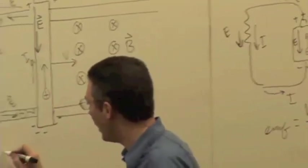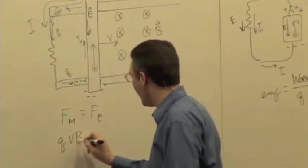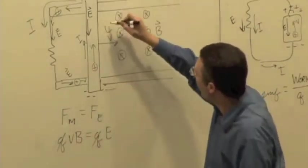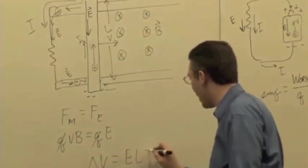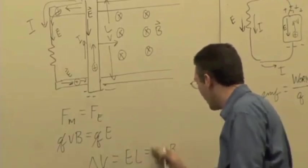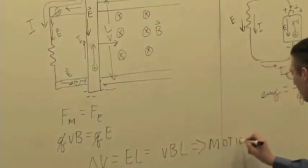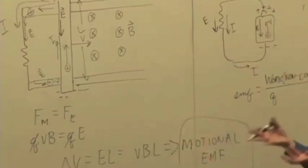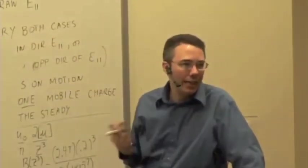The magnetic force is essentially playing the role of an EMF. We can figure out what it is: at equilibrium, the magnetic force equals the electric force, so QVB = QE, giving E = VB. If we know the length L of the bar, the potential difference is ΔV = E·L = V·B·L. This is called Motional EMF — the magnetic field creates a polarization which can drive a current just like a battery can drive current in a circuit.